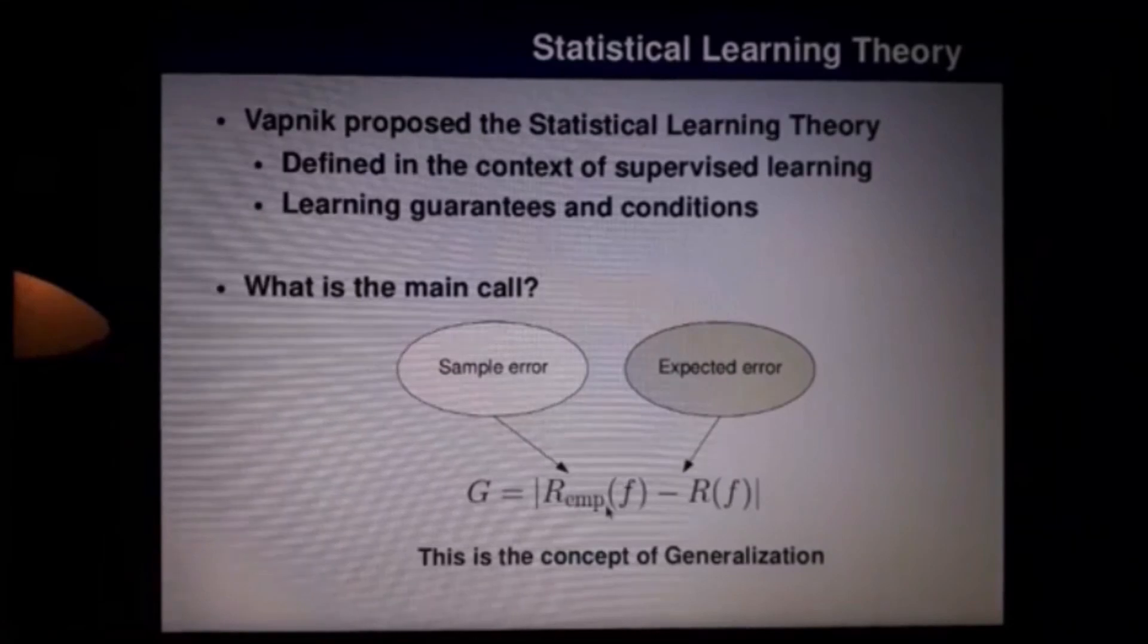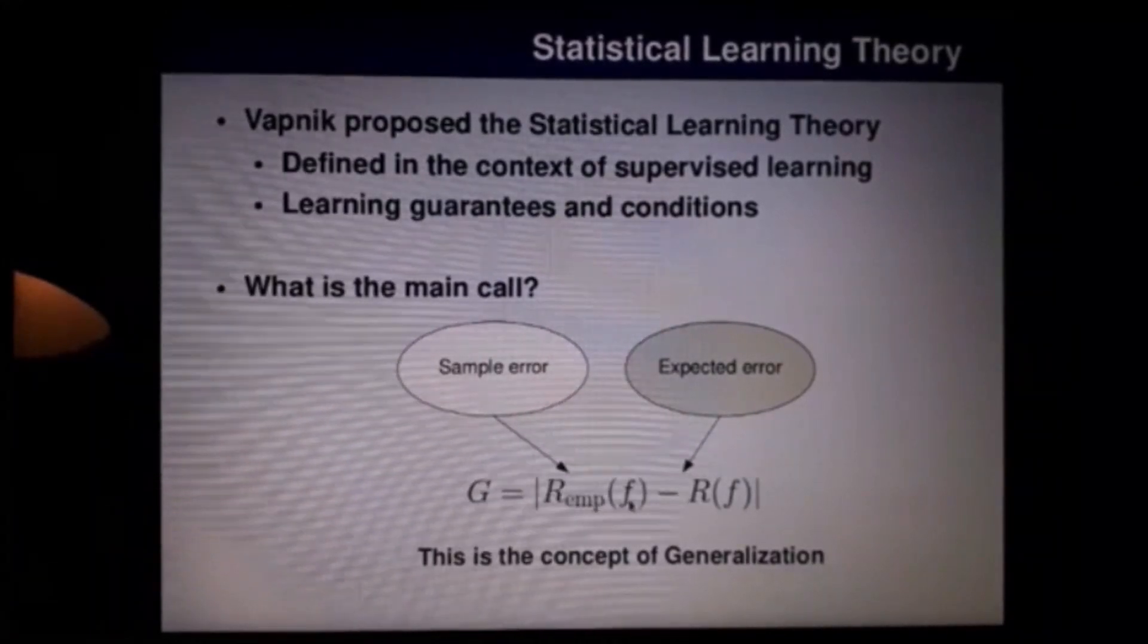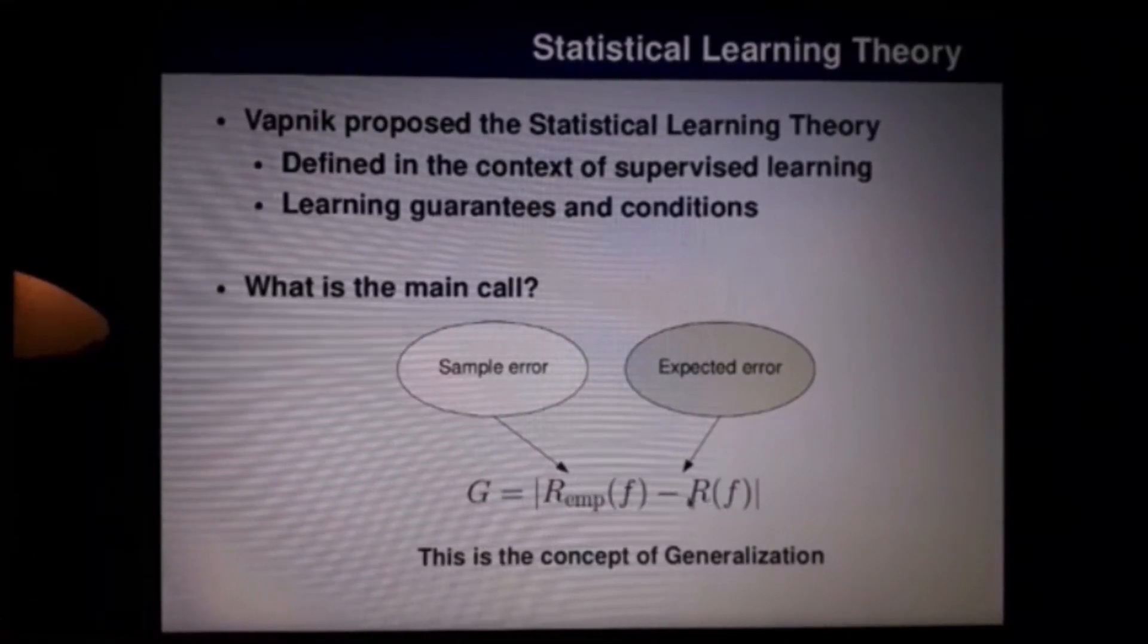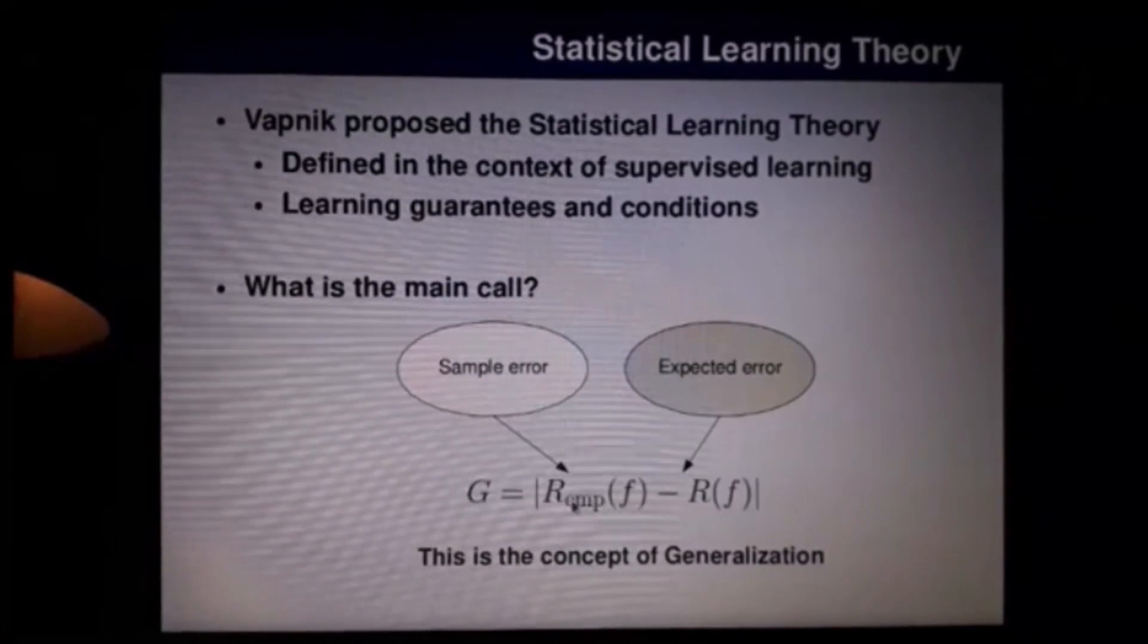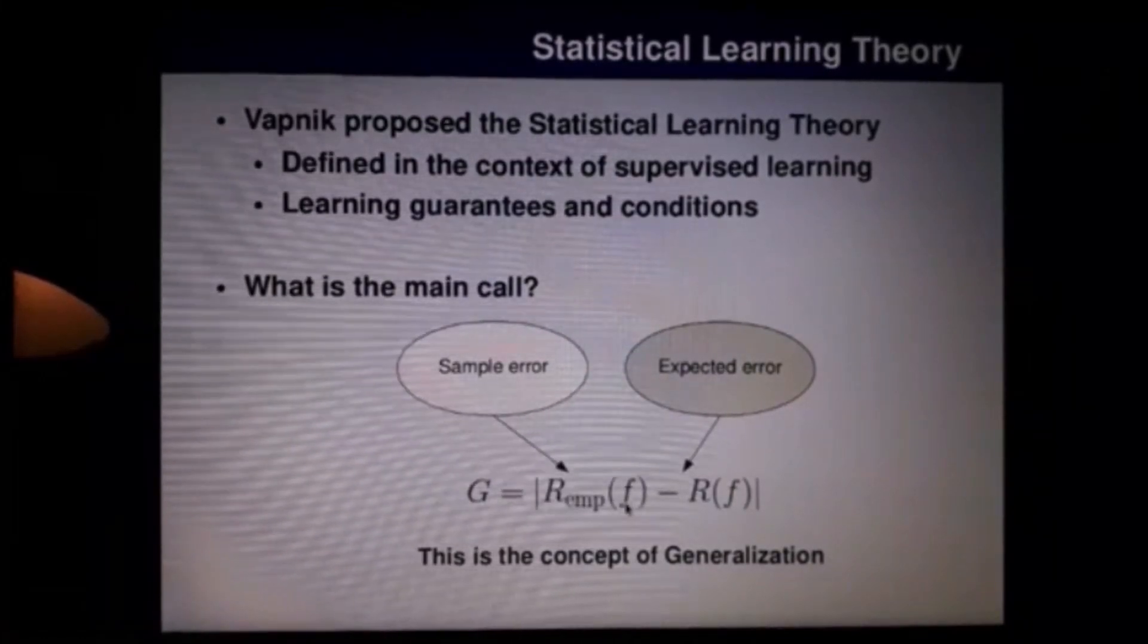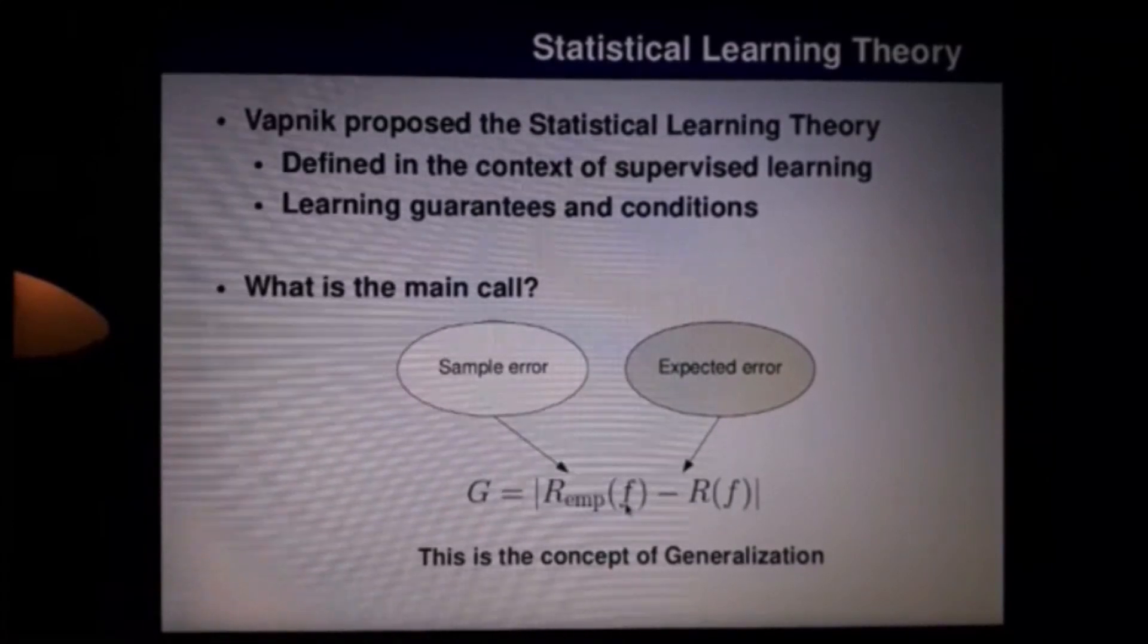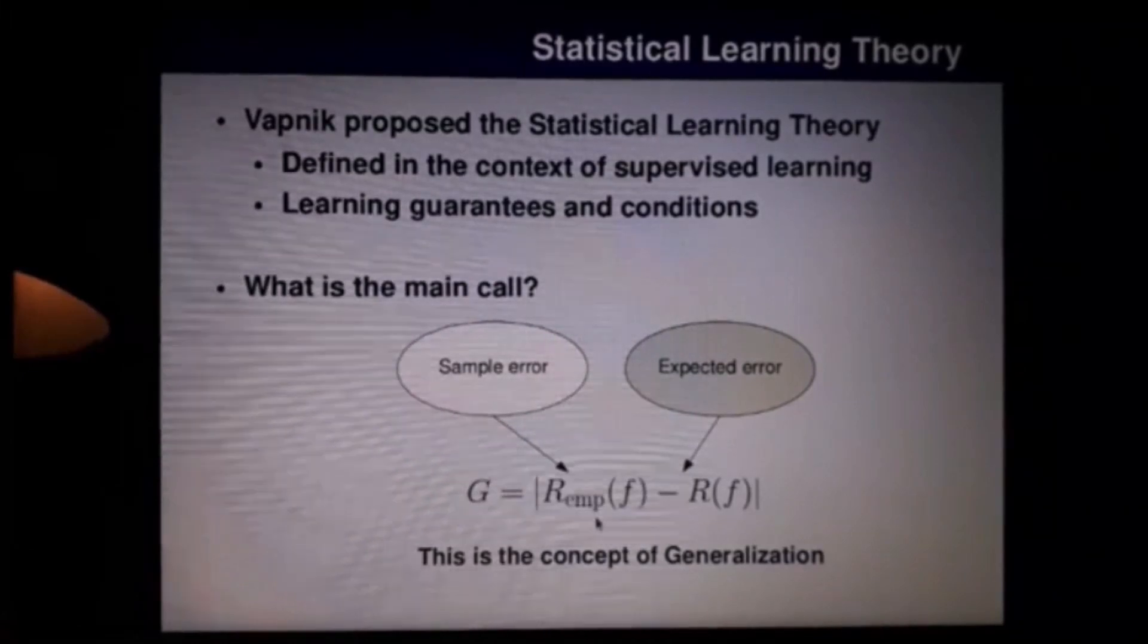So, generalization is basically a concept of making possible to estimate the real risk, the real error, the error for unknown examples using a test sample or using some sample we have access to. That's the main concept of generalization. So, observe generalization does not necessarily imply in learning, but it just tells us that a classifier F has got a low empirical risk that's close to the expected one. So, the empirical risk and the expected risk are close enough.